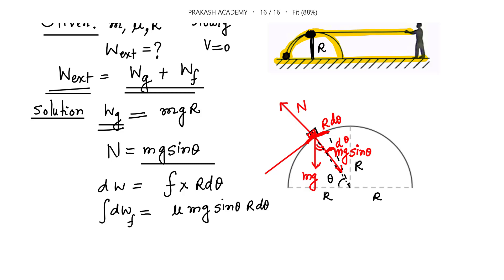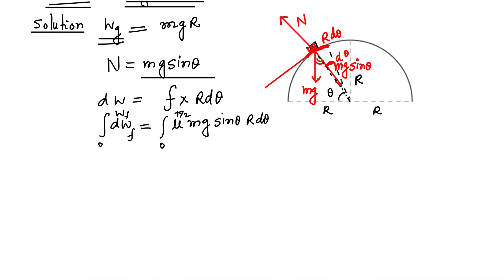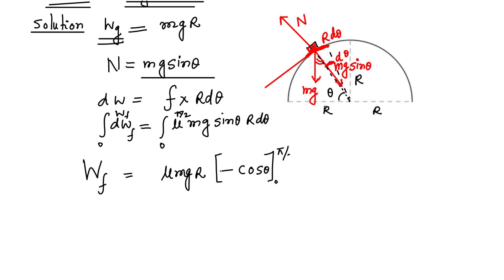Integrating both sides, theta goes from 0 to π/2, and work goes from 0 to W_f. Taking mu, mg, and R outside as constants, we integrate sin(theta) to get minus cos(theta), evaluated from 0 to π/2. This gives mu*mg*R * [−cos(π/2) + cos(0)] = mu*mg*R * [0 + 1] = mu*mgR. So the work done by friction is mu*mgR.